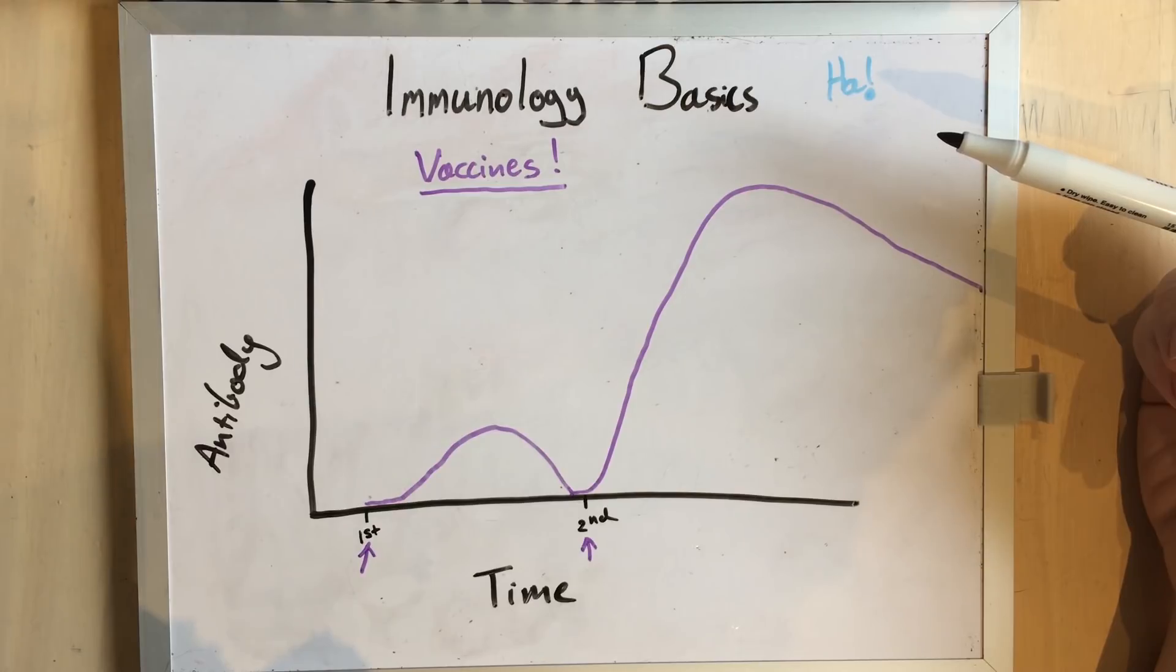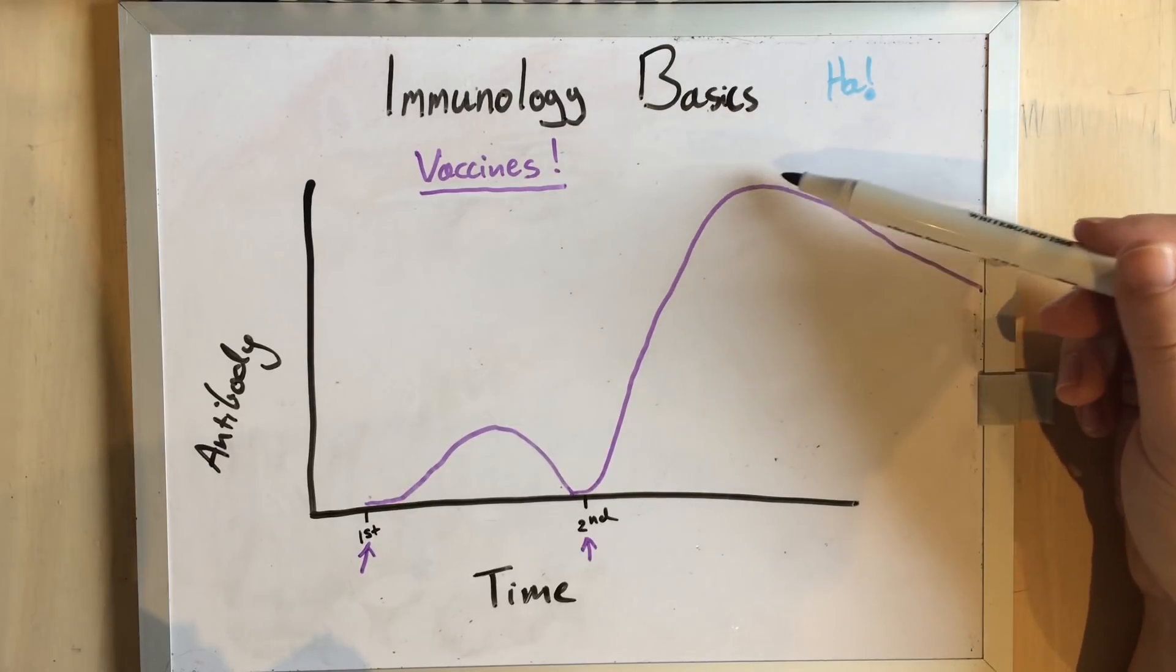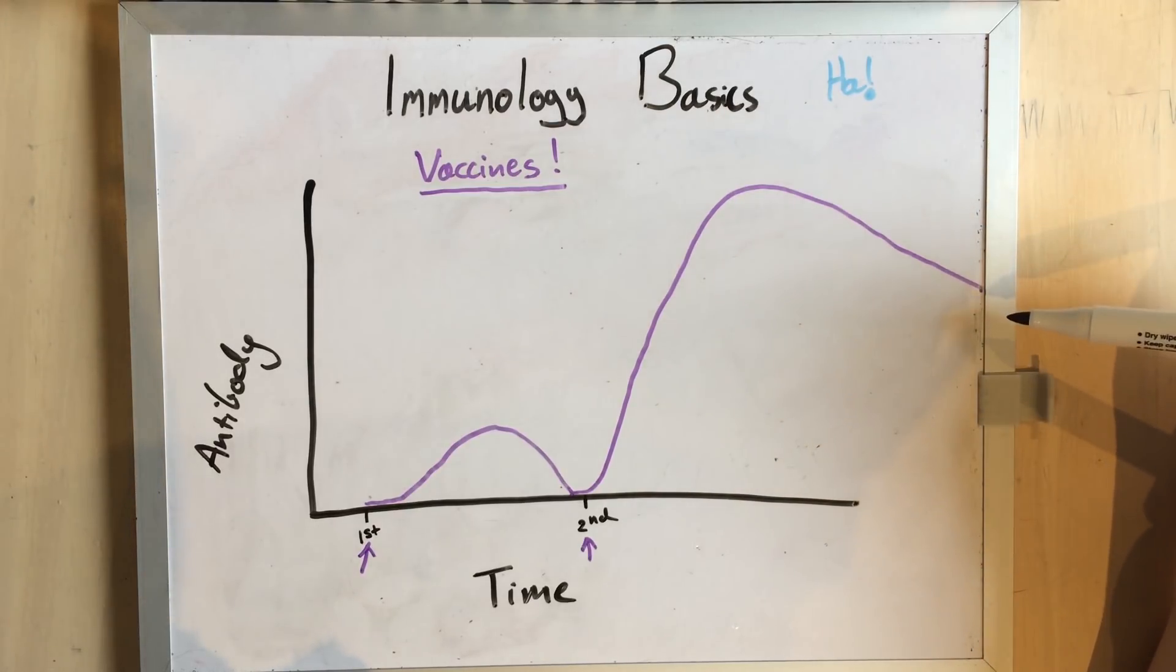Now, one of the current debates in vet science is how long it actually takes these antibody levels to drop for our core vaccines, like rabies, parvovirus, distemper, and infectious hepatitis.